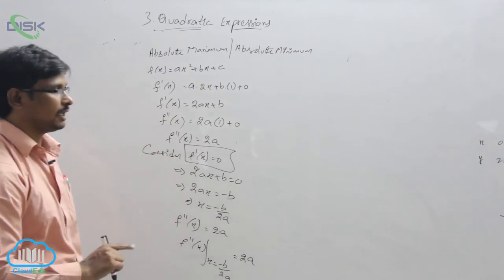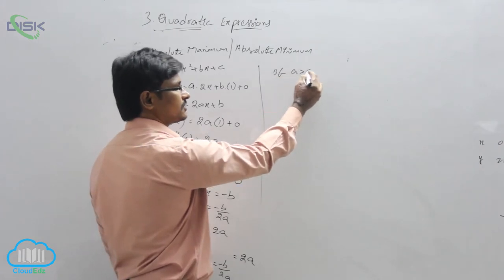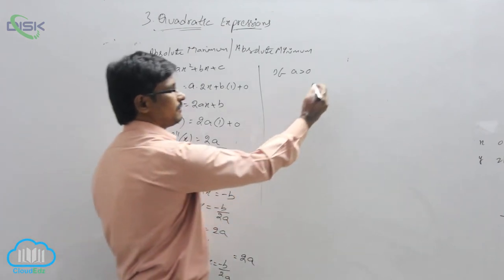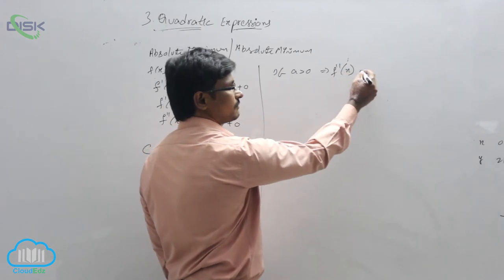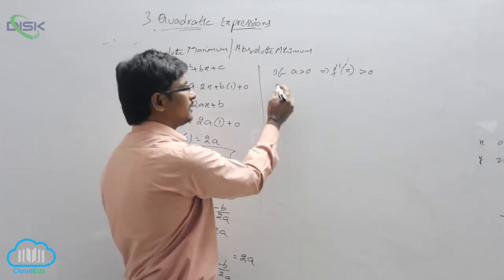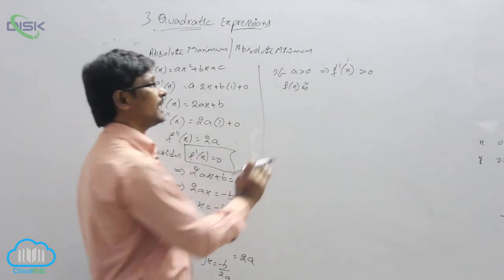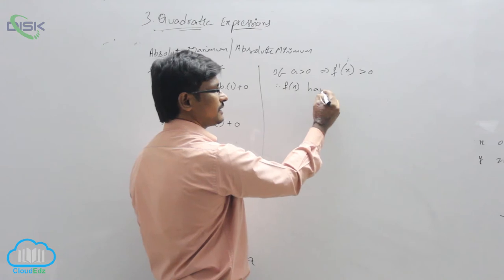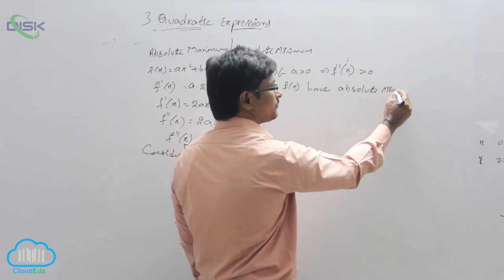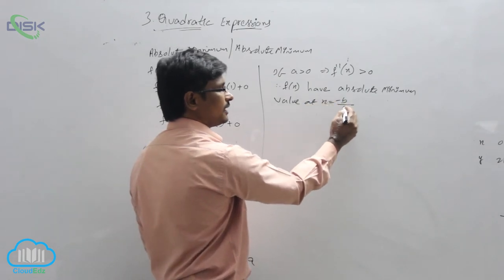Now 2a means the value of a may be greater than 0 or less than 0. Suppose if a is greater than 0, this total value will be greater than 0, so f double dash of x will be greater than 0. If f double dash of x is greater than 0, therefore f of x has an absolute minimum value at the point x equals minus b by 2a.